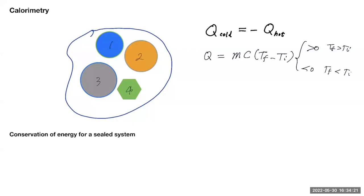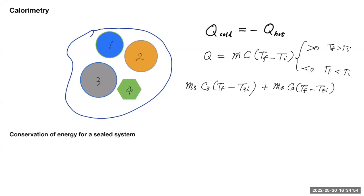In our case, objects one and two give up heat and objects three and four receive heat. The heat received by object three is mass of object three times C_3 times (T_final minus T_3_initial), where T_final is greater than T_3_initial. Similarly, the heat absorbed by object four is M_4 times C_4 times (T_final minus T_4_initial). Note that T_4_initial may not equal T_3_initial, but they must share the same final temperature — that's when thermal equilibrium is reached.